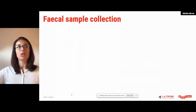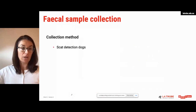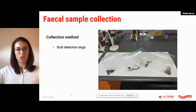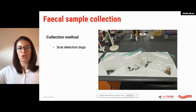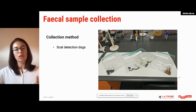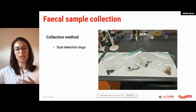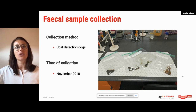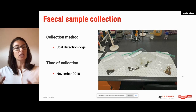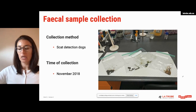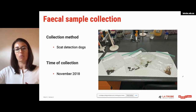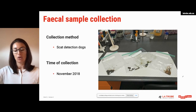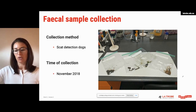We decided to start with fecal sample collection because they were easy to do, and in a short amount of time we could have access to a number of samples. We decided to use scat detection dogs for that. The samples had specific GPS locations, were bagged individually, and upon arrival in the lab we froze them almost straight away. We collected the samples in November 2018, and the rationale for this date was that between 2016 and 2018 there had been a number of reports of wild dog attacks on livestock.